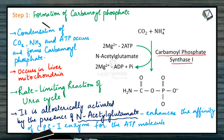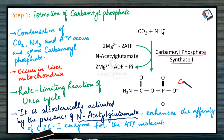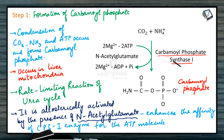Step 1 is the formation of carbamoyl phosphate. The product formed by the condensation of carbon dioxide and ammonia, in the presence of ATP and the enzyme carbamoyl phosphate synthase 1, is carbamoyl phosphate. N-acetylglutamate enhances the affinity of this enzyme for the ATP molecule.